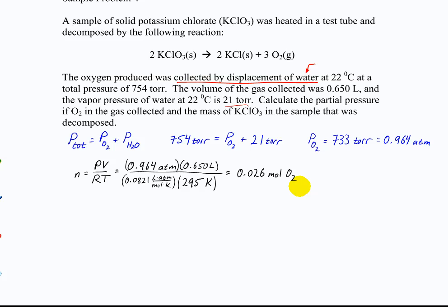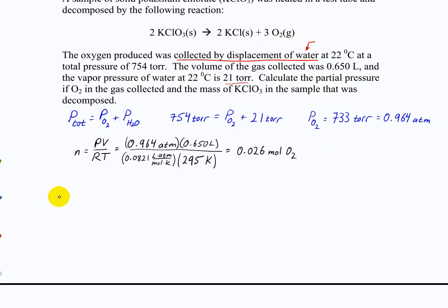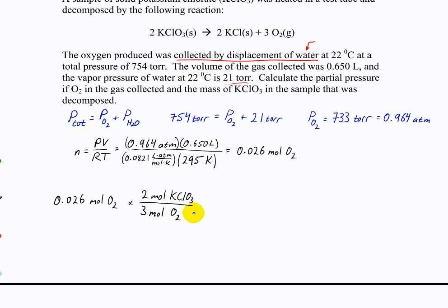At this point the problem no longer has anything to do with gases — once you've found the moles, this is just a plain stoichiometry problem from the last chapter. You've got 0.026 moles of oxygen; the molar ratio is two-thirds, so you have two moles of potassium chlorate for every three moles of oxygen based on the equation. Then multiply by the molar mass of potassium chlorate, which is 123 grams per mole.